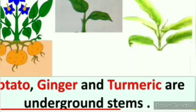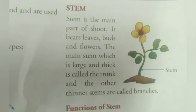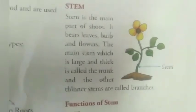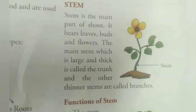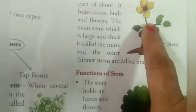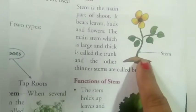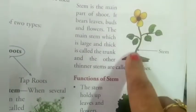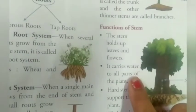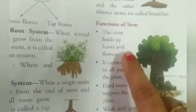Now let's start the reading. Stem is the main part of the shoot. It bears leaves, buds, flowers, branches, and fruits. The main stem is called the trunk, which is large and thick, and the other thinner stems are called branches. The stem holds up leaves and flowers, firmly holds the plant, and supports the branches.